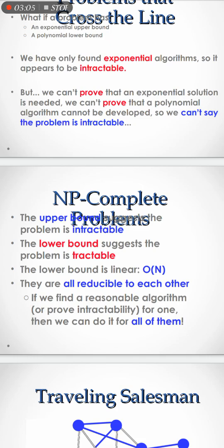The lower bound is linear — Big O of N. Linear always has Big O of N complexity. These problems are all reducible to each other. If we find a reasonable algorithm or proof of traceability for one, then we can do it for all of them. If we find traceability through one algorithm, we can find it for all algorithms.